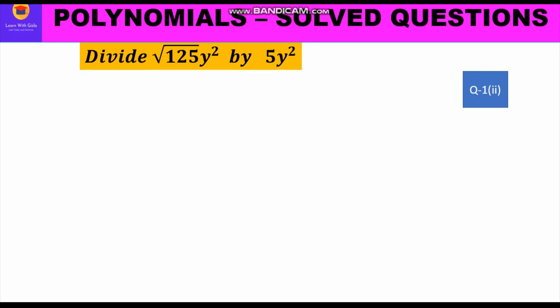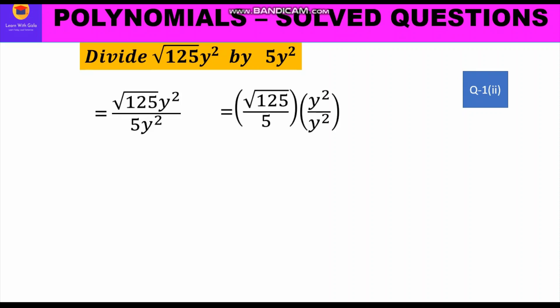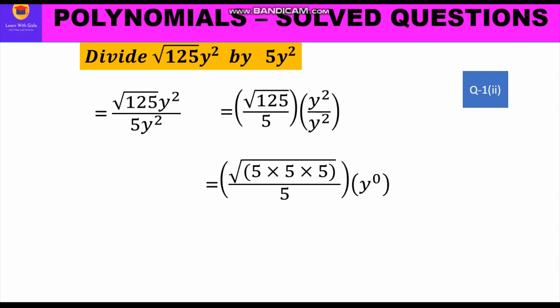Now let us move to the second part. It is given: divide √125 y square by 5y square. We write √125 into y square upon 5y square. Separating the coefficient from the variable part, we write √125 upon 5 into y square upon y square. Now √125 can be written as the square root of 5 into 5 into 5.